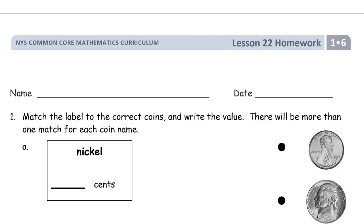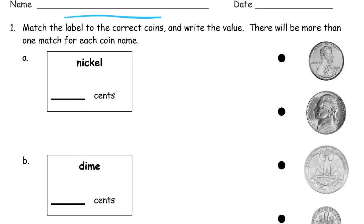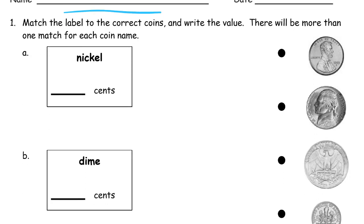Welcome to the homework for lesson 22. This is module 6 of first grade. Get your name on here first. And we're matching the label to the correct coins and writing the value for the coin.